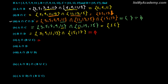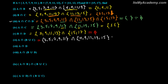Now A intersection with B union C. B union C means all the elements of B and C must be there without repetition. In B we have 7, 9, 11, 13. Adding elements of C: 11 and 13 already mentioned, so we add 15. So B union C is {7, 9, 11, 13, 15}. Now what is common between A — which is {3, 5, 7, 9, 11} — and B union C? The answer is {7, 9, 11}.